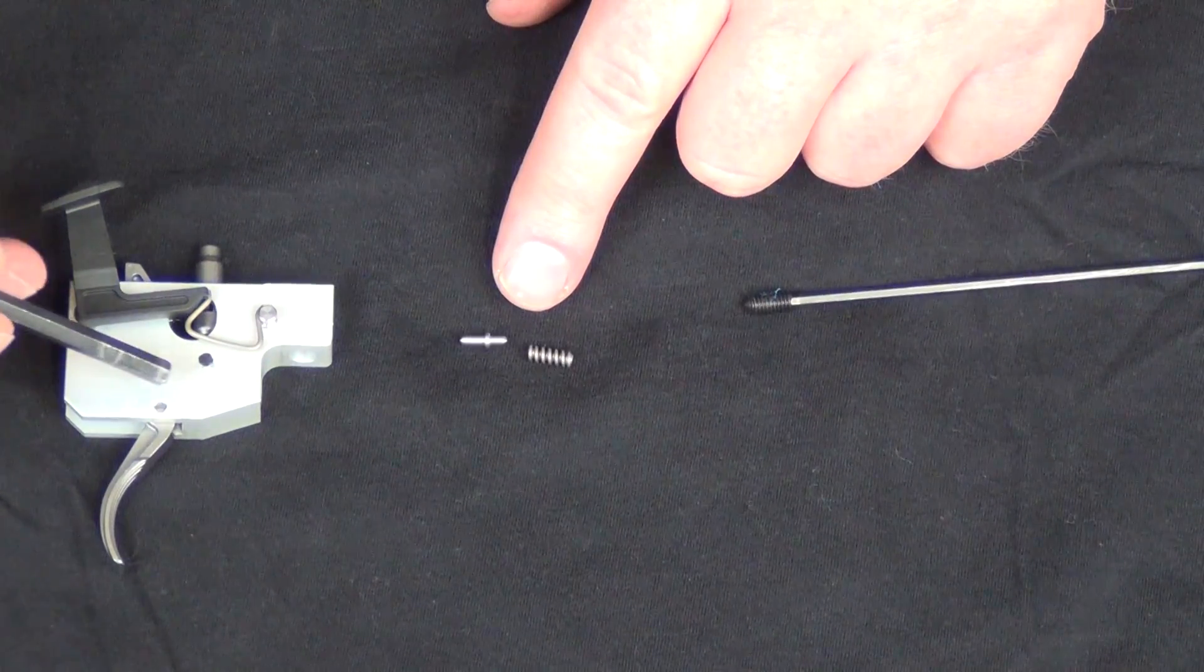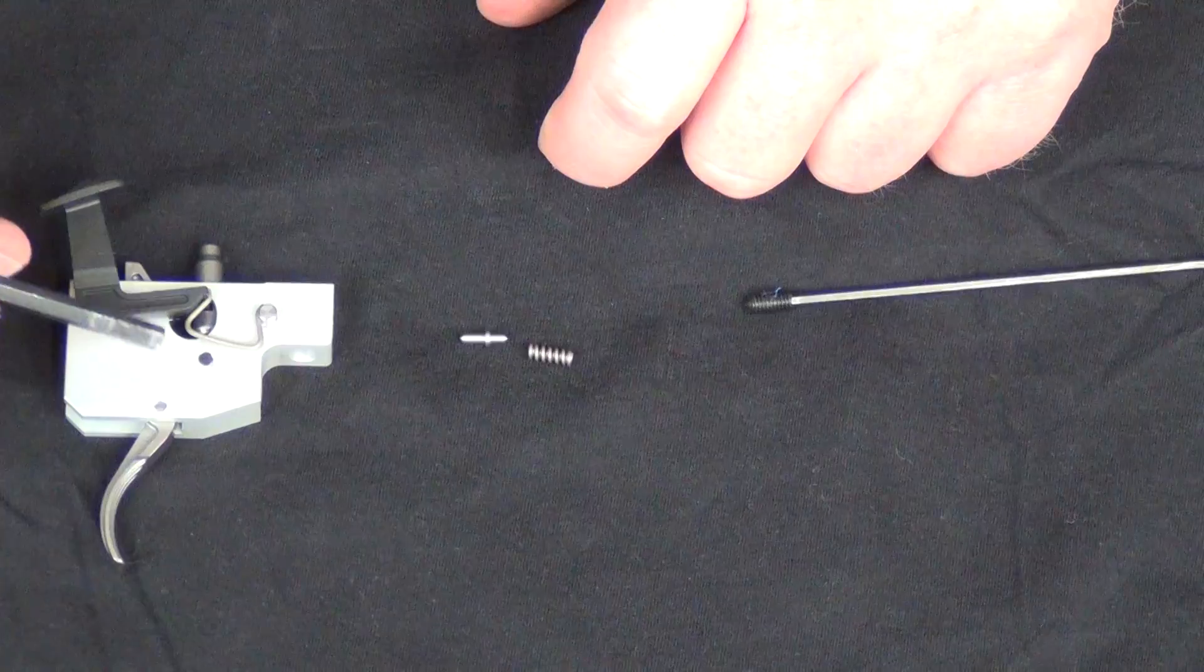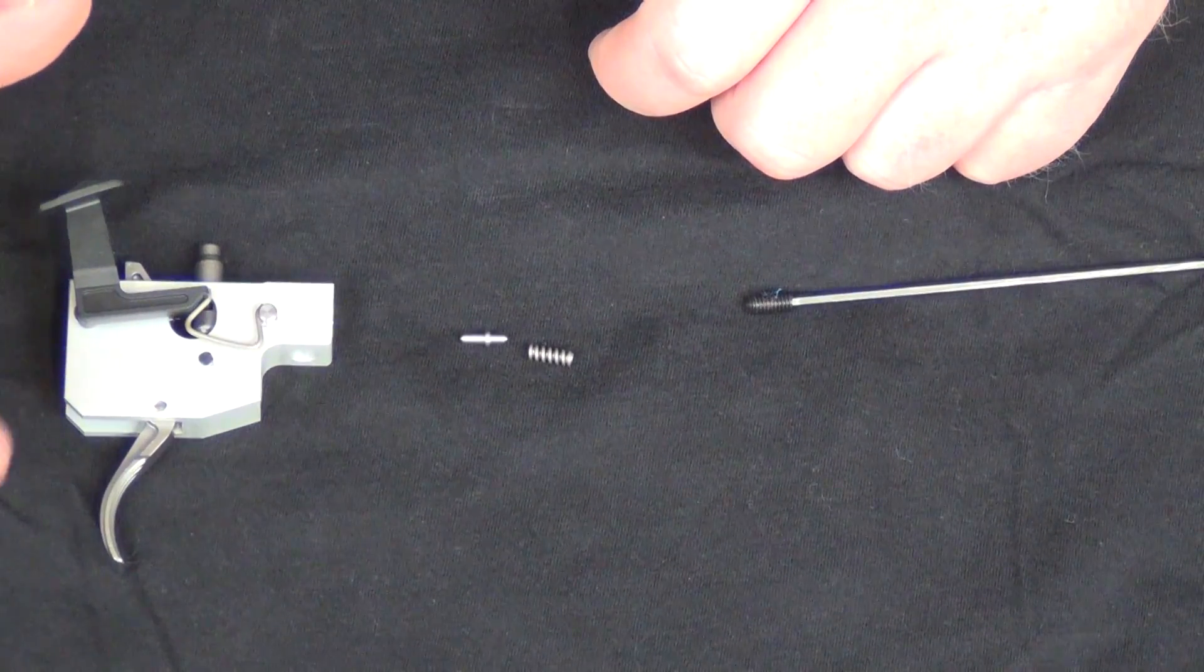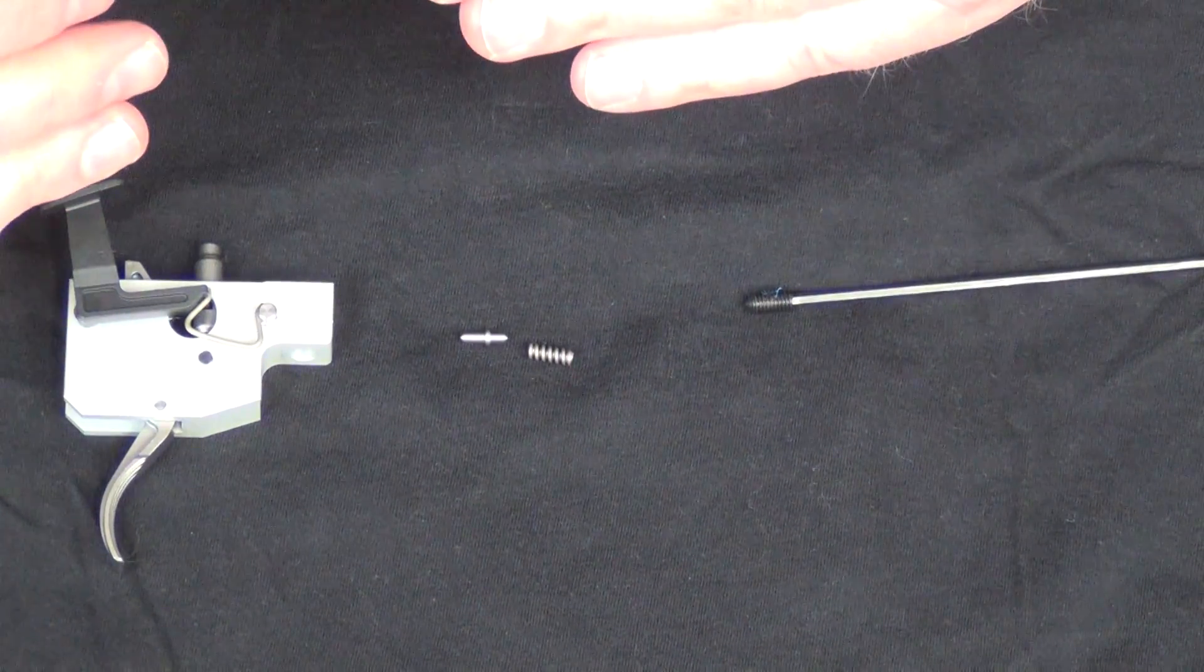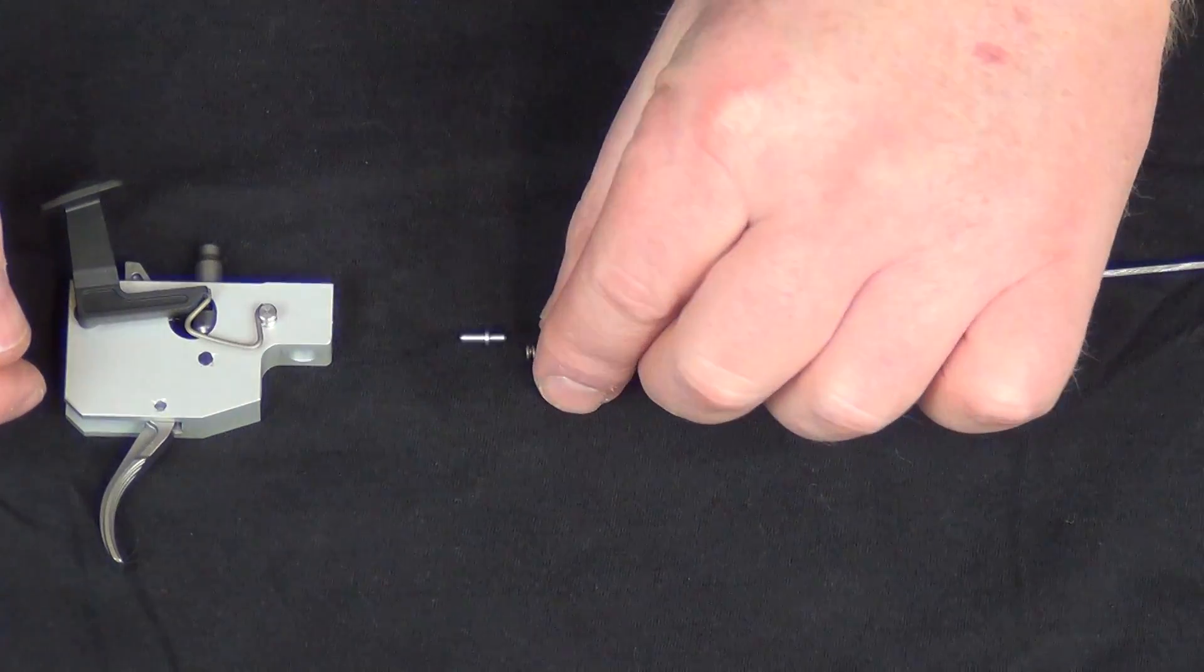So that plunger actually pushes against the trigger housing. Up above, you can see this is where your trigger pivots. This is touching your trigger right here, and that's putting that spring pressure on that trigger, holding it in place. And so when you pull that trigger, you're not only overcoming the friction of the sear engaging the firing pin, but you're also overcoming this spring.